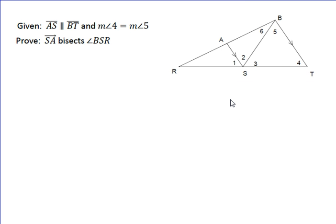So we want to show that ray SA bisects angle BSR. So basically our goal is going to be show angle one is congruent to angle two. So in doing that, we want to start by just writing down our given statements.